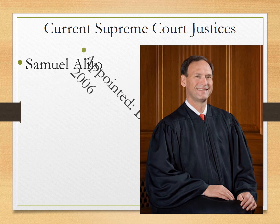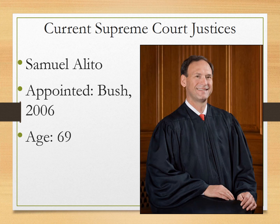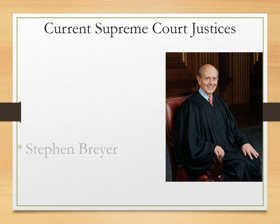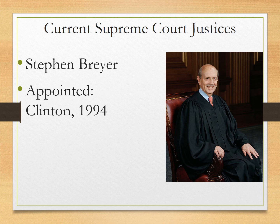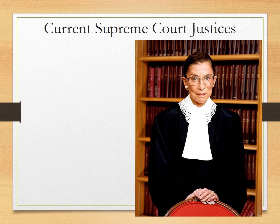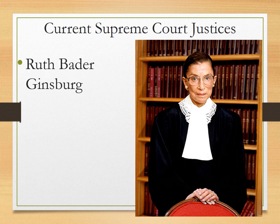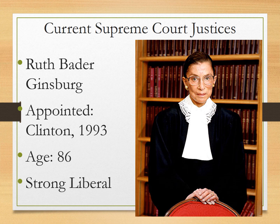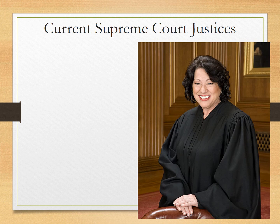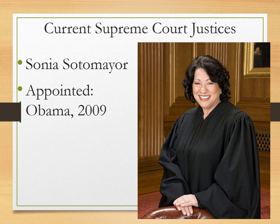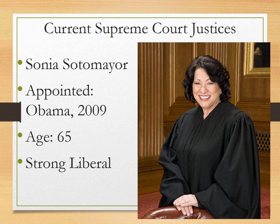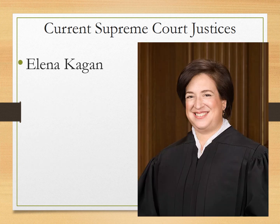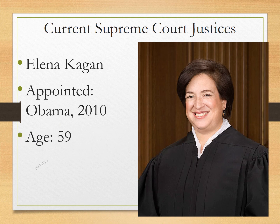Next, we've got Samuel Alito, who was a President Bush appointee back in 2006. He's getting up there in age, and he's conservative. We've also got Stephen Breyer, who was appointed by Bill Clinton, a Democrat, in the 90s. He's also older, and he is liberal. Then we've got the one that all the Democrats pray stays healthy — Ruth Bader Ginsburg. She was appointed by Clinton back in 1993, she is 86 years old, and she is very liberal — considered the most liberal member of the Supreme Court. Then we've got Sonia Sotomayor, who was one of Obama's appointees. She is 65 years old and also very liberal, and she is the first Latina ever to serve on the Supreme Court. We also have Elena Kagan, who was appointed by Obama. She's younger, and she is considered liberal.